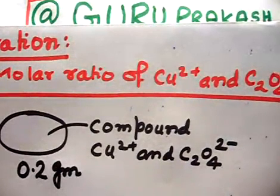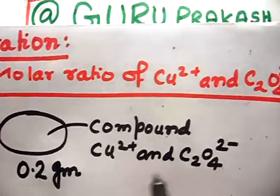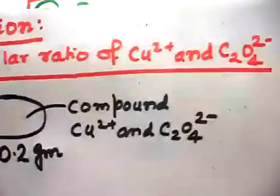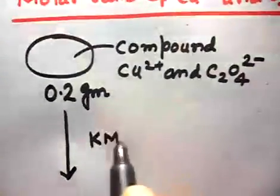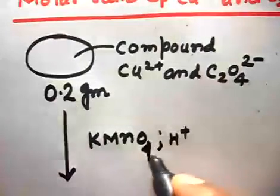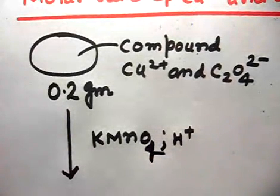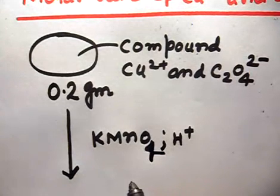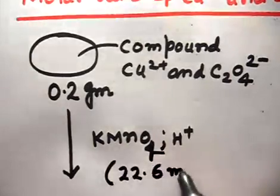The question says: on titration with 0.02 M KMnO₄ in the presence of acidic medium, this compound is titrated. KMnO₄ acts as the oxidizing agent and the medium is acidic. In acidic medium, MnO₄⁻ goes to Mn²⁺. It requires 22.6 mL of the oxidant, so the KMnO₄ required is 22.6 mL.